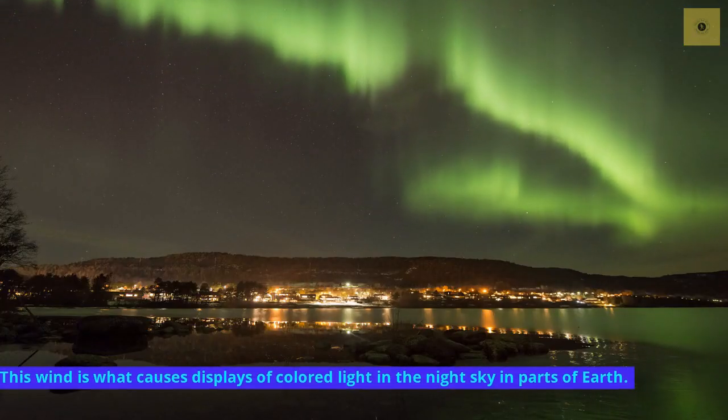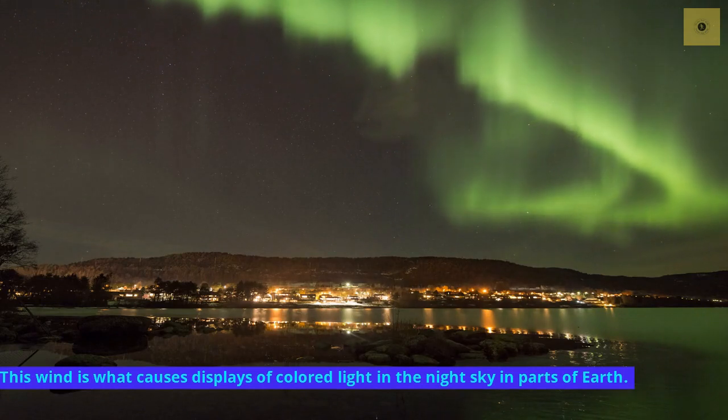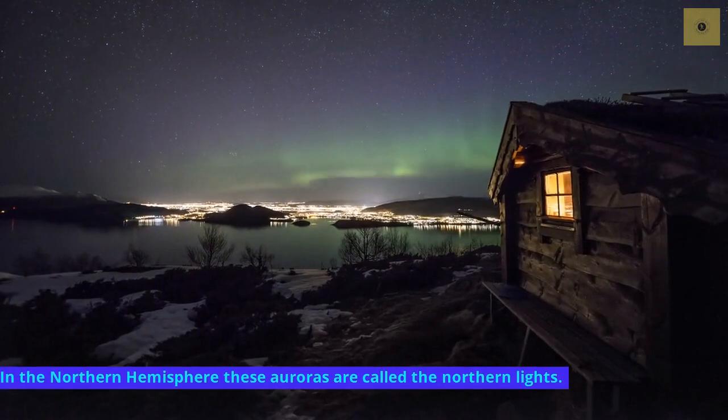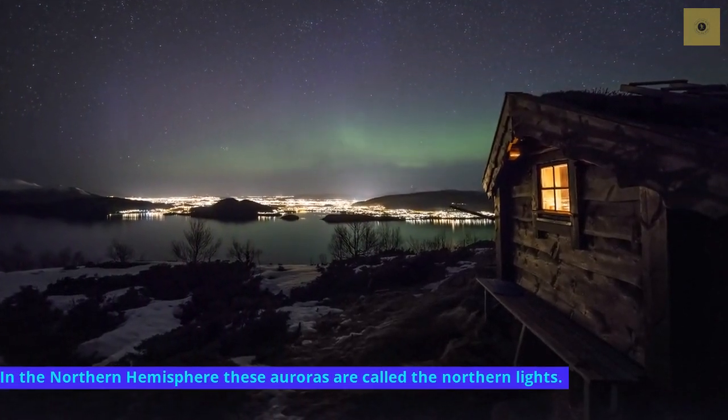This wind is what causes displays of colored light in the night sky in parts of Earth. In the Northern Hemisphere these auroras are called the Northern Lights.